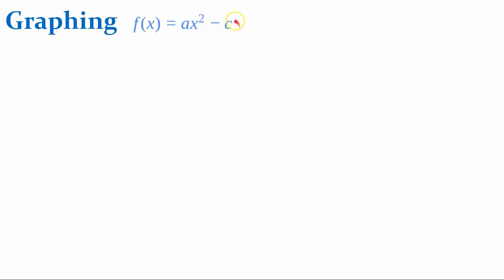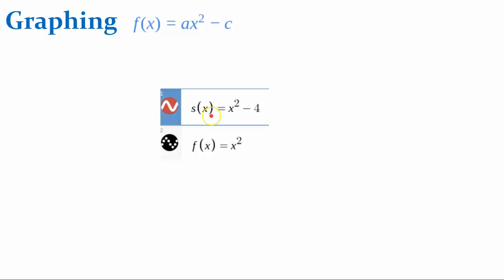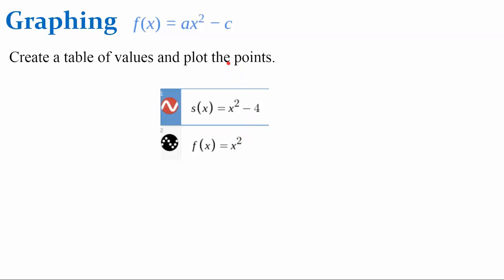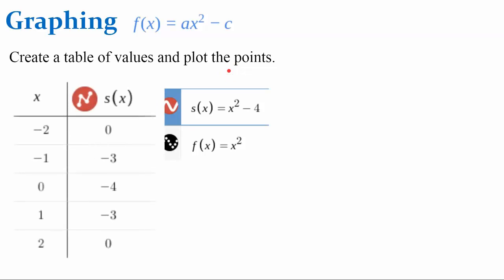Let's graph one where we're subtracting c, where c is negative. Now we have function s, which is x squared minus 4, and we're going to compare this to the parent function. To graph it, let's create a table of values and then plot the points. I used the same 5 inputs. For example, for x equals negative 2: negative 2 squared is 4, and 4 subtract 4 is 0. Continue on for all of your inputs.